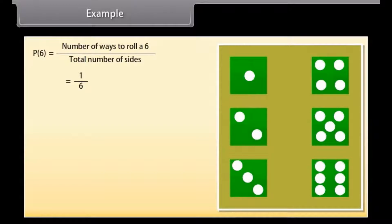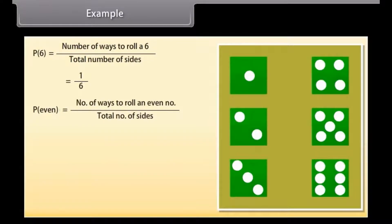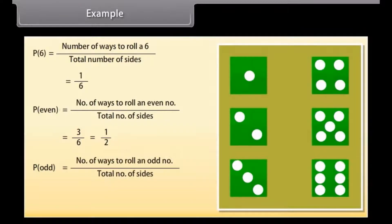The number of ways to roll even numbers is 3. So P(even) = number of ways to roll an even number upon total number of sides = 3/6 = 1/2. The number of ways to roll odd numbers is also 3. So P(odd) = 3/6 = 1/2.